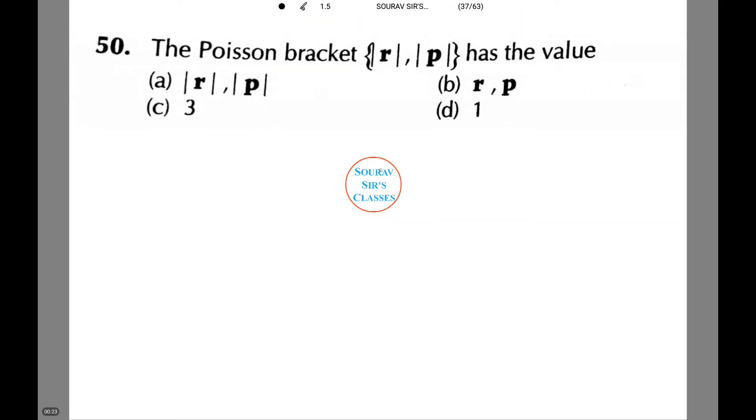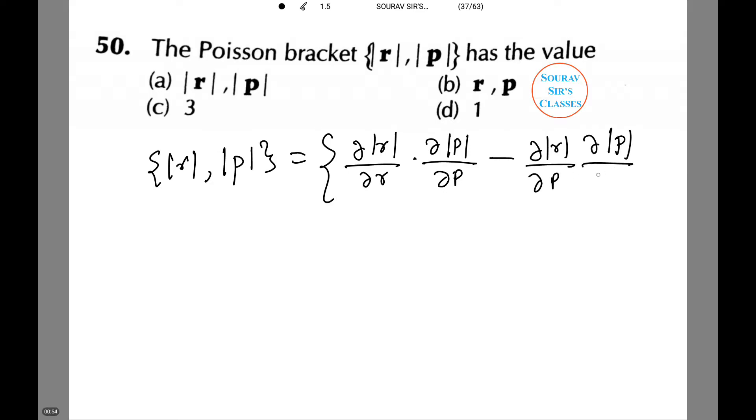The Poisson bracket has the value among the following. Let's see how to do this. Mod r comma mod p equals del mod r by del r into del mod p by del p minus del mod r by del p into del mod p by del r. This equals 1 into 1 minus 0 into 0, which equals 1. Hence option D is the correct option.